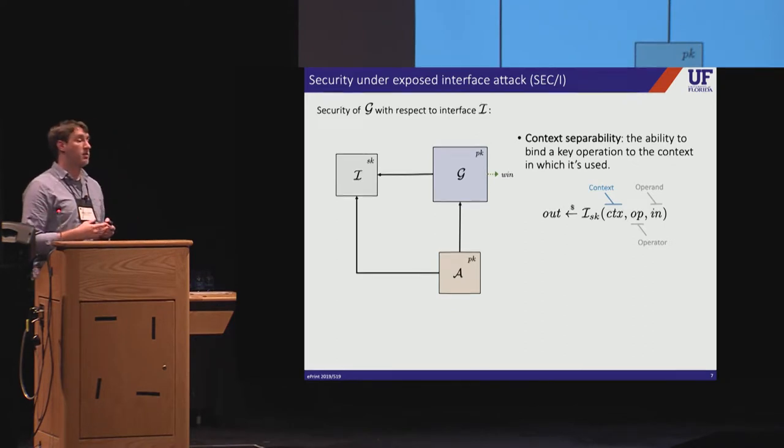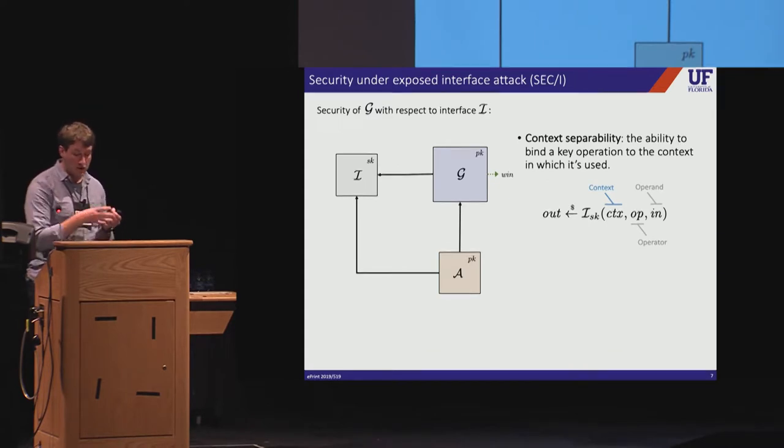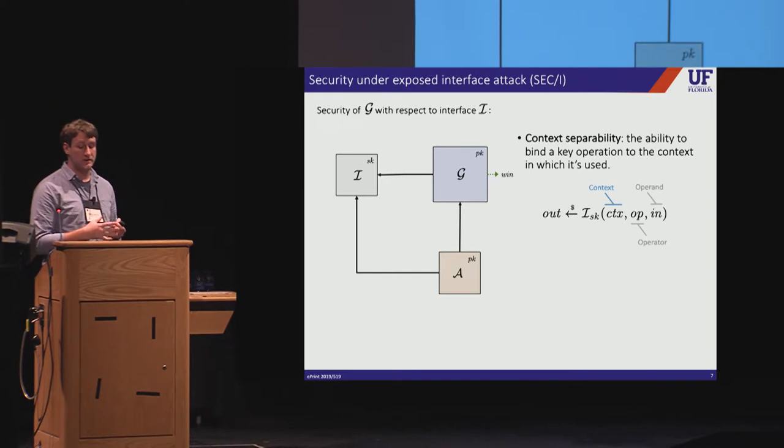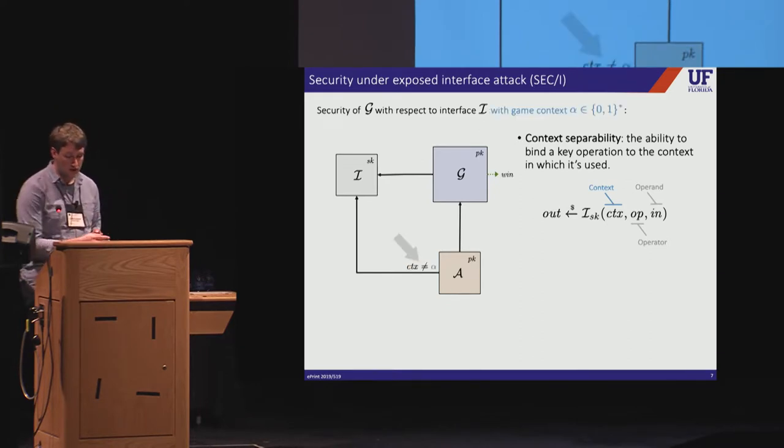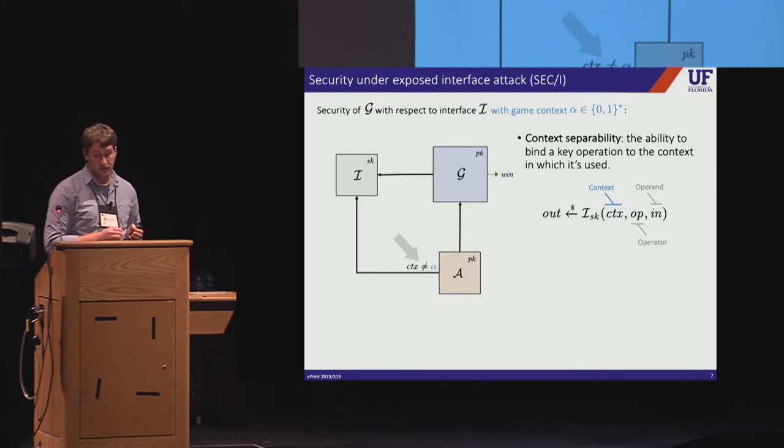Proving security in this setting will often require a property that we call context separability. Loosely, an interface is context separable if the key operations can be bound to the context in which they're used. So our syntax for interfaces makes this explicit. Among other things, it takes as input a context string that's meant to uniquely identify the calling application. Our security experiment involves a distinguished context string, which we call the game context. And we require that the adversary's interface queries never use the game context. We'll call this requirement in the experiment context separation. Now, in our experiment, we allow the game context to be chosen by the adversary.